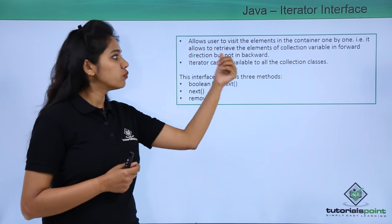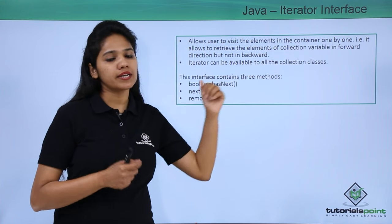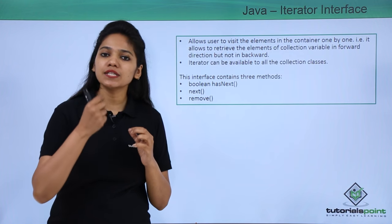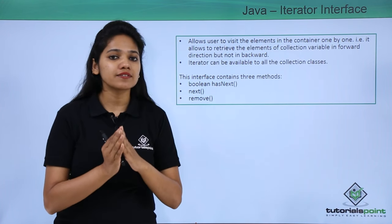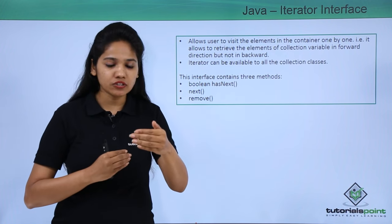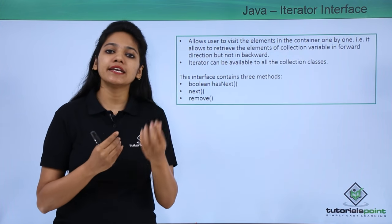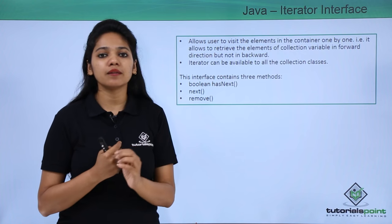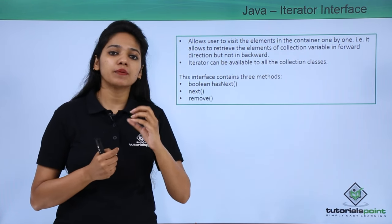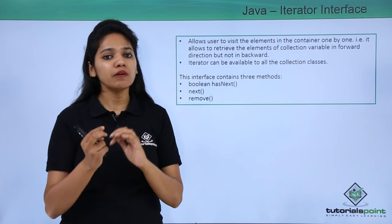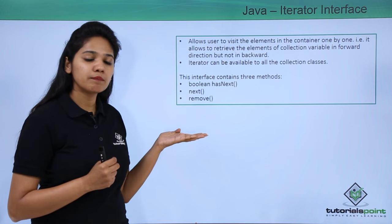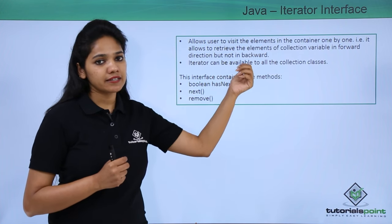Let us see how an iterator acts as a traversing element of your object. An iterator allows you to visit the elements of a container one by one, traversing them only in the forward direction and not in the backward direction. Once you use this iterator to traverse through the elements, it also allows you to add, delete, or remove a particular element at a particular point of time.